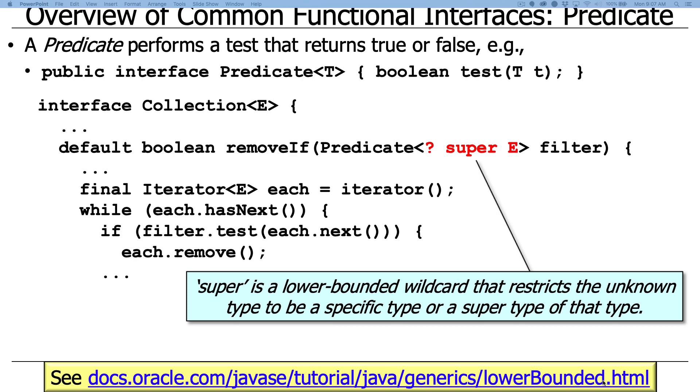This funny syntax, the question mark super E, is something that's called a lower bounded wildcard that says that the actual type that's passed in when you instantiate the map or the collection has to be a specific type or a super type of that type. In other words, a parent of that type. Don't worry too much about that right now. It's just syntax.